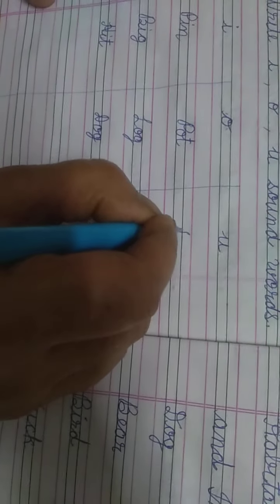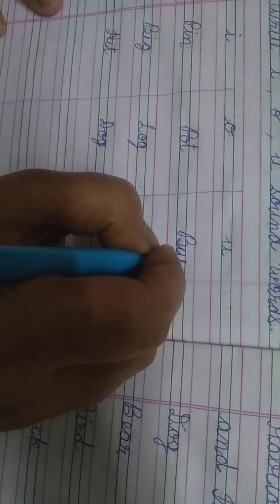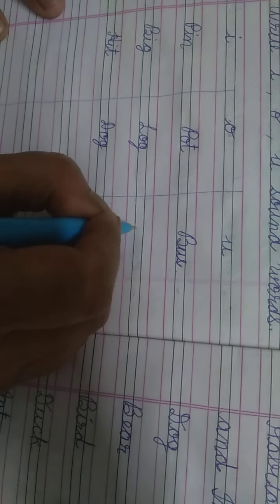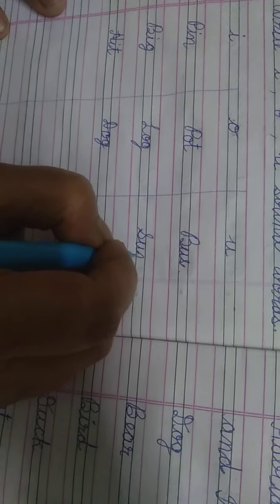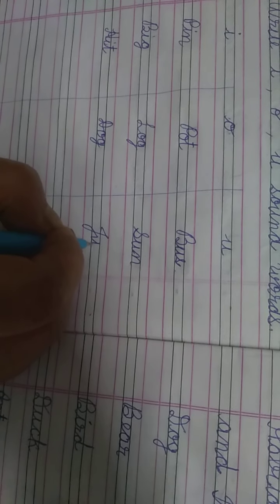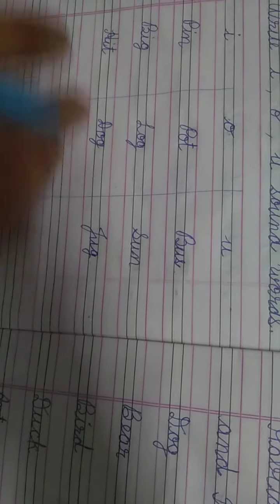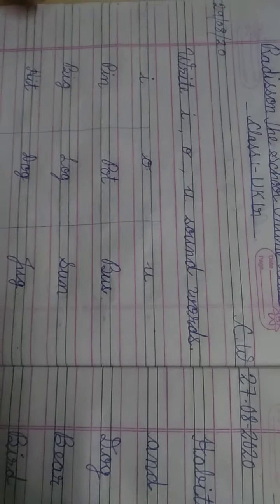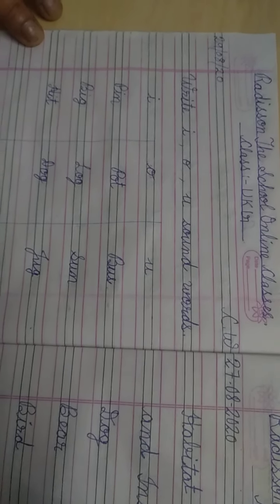U sound word क्या है? B-U-S. Bus. S-U-N. Sun. J-U-G. Jug. मैं 3-3 लिखा है. आपको 5-5 लिखना है. Okay? Bye.